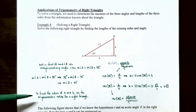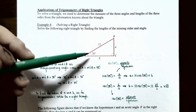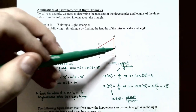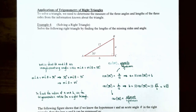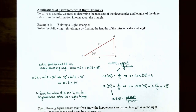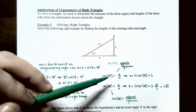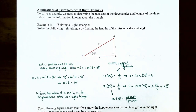Now we're going to find the lengths of side A and side B using the trigonometric ratios. Since sine of 30 degrees is opposite divided by hypotenuse, sine of 30 degrees equals A divided by 12. Multiplying both sides by 12, A equals 12 times sine of 30 degrees, which equals 6, because sine of 30 degrees is one half.